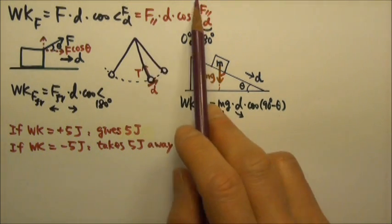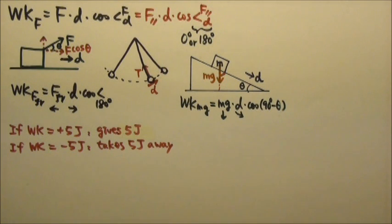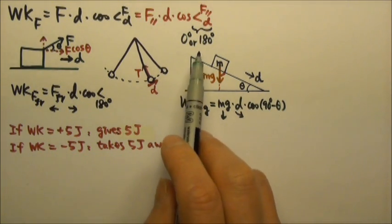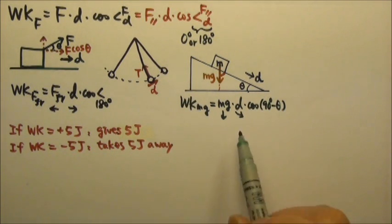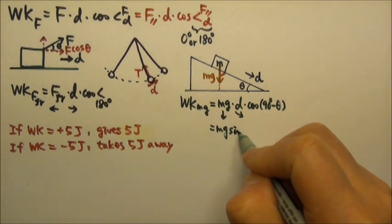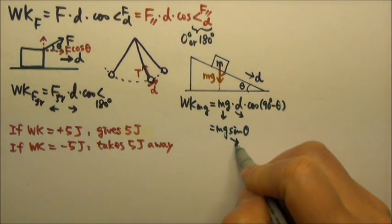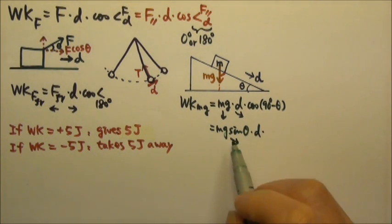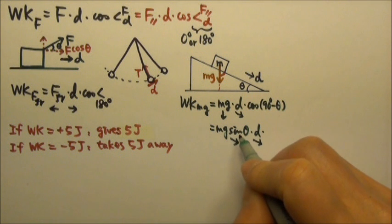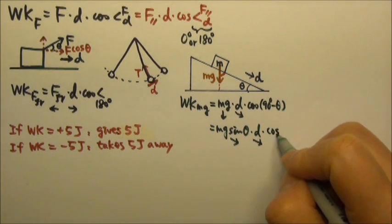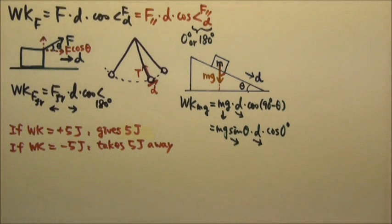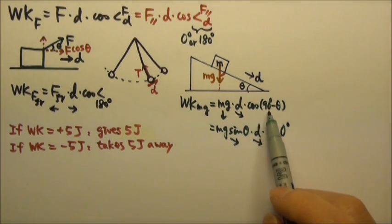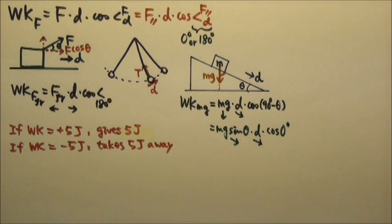We can also use the parallel component of the force. The component of mg along the incline is mg·sinθ, going down the incline, times the displacement d, which also goes down the incline. That means the angle between them is zero degrees, so cosine zero is one. This gives the same result, since cosine(90° − θ) = sinθ.